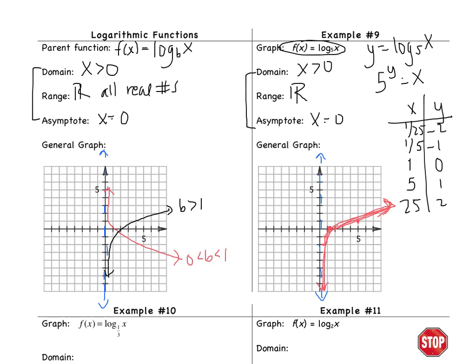Okay, and you'll notice because b was greater than 1, 5 was greater than 1, my graph is increasing as I said in the original function that it should be. You'll notice the domain is x is greater than 0. It only takes on positive values, but the range is all real numbers. It takes on negatives and positives.